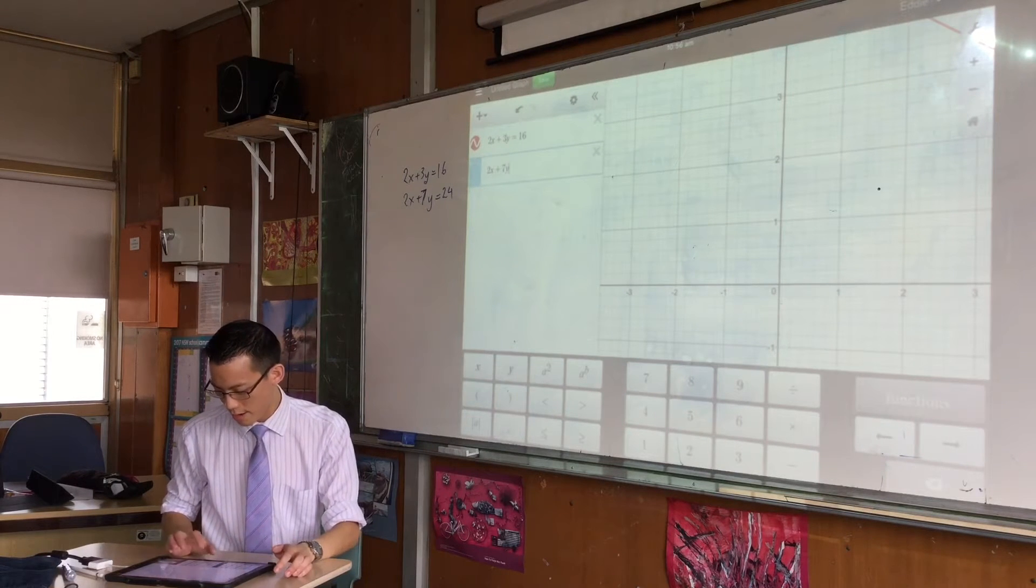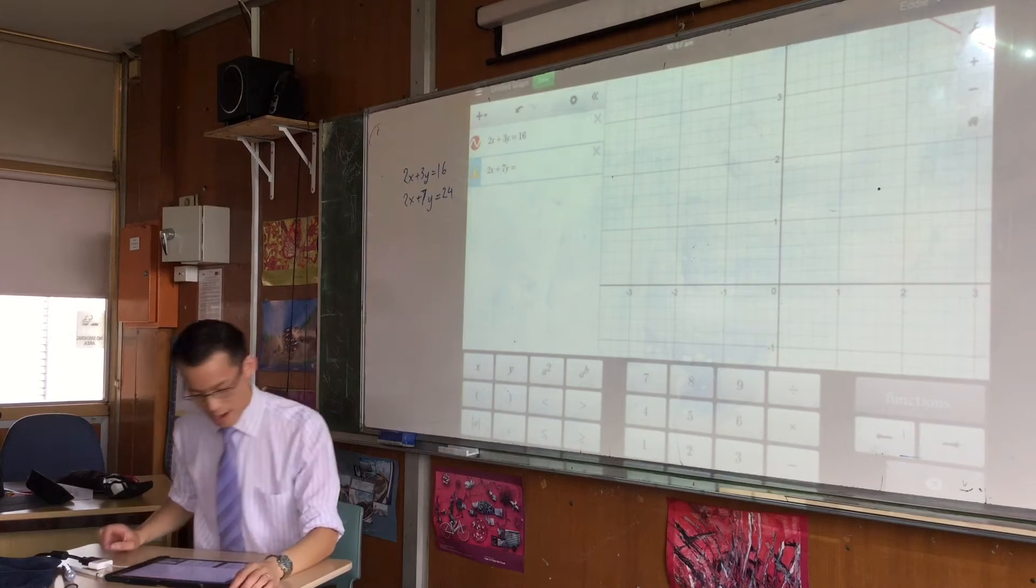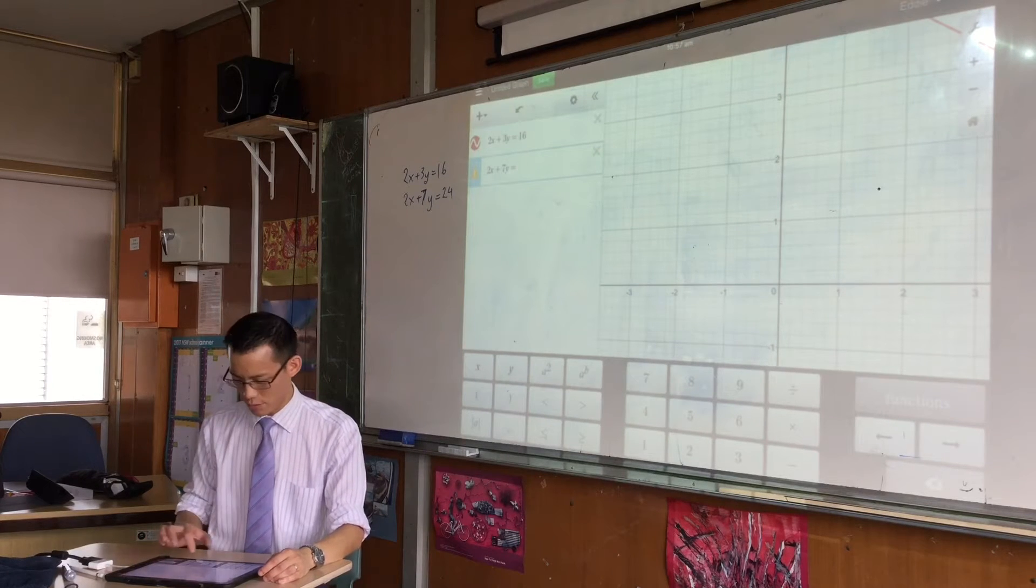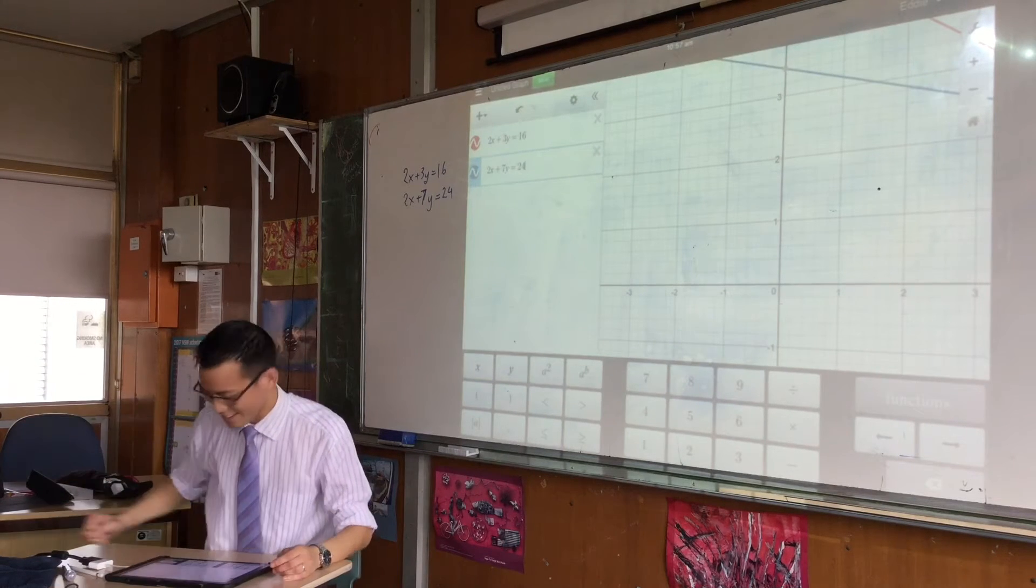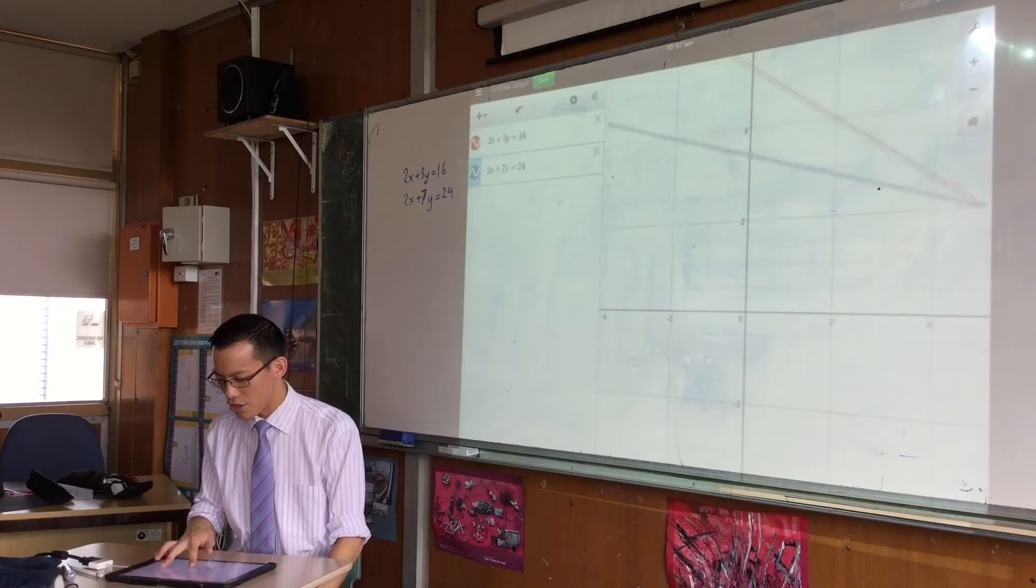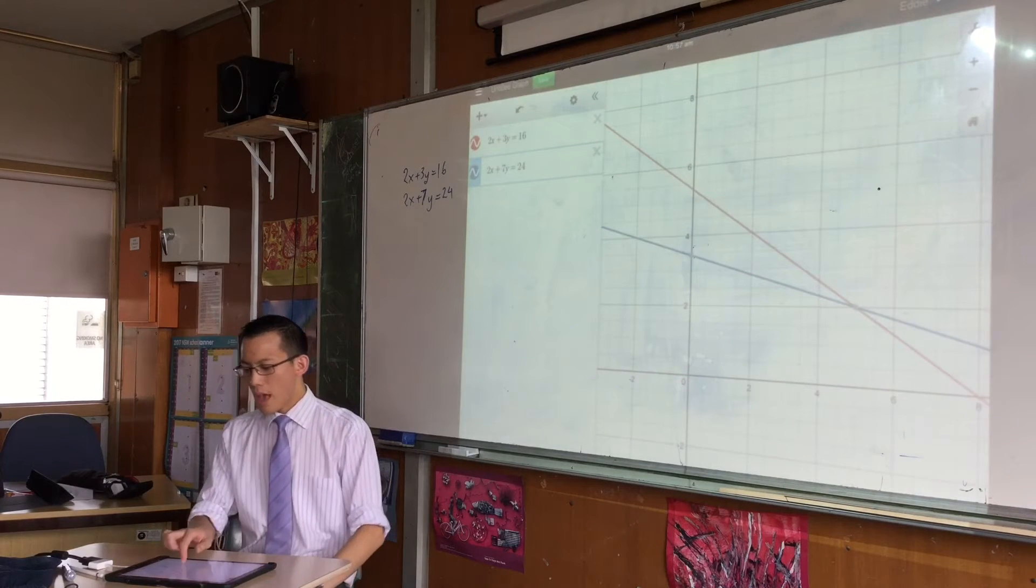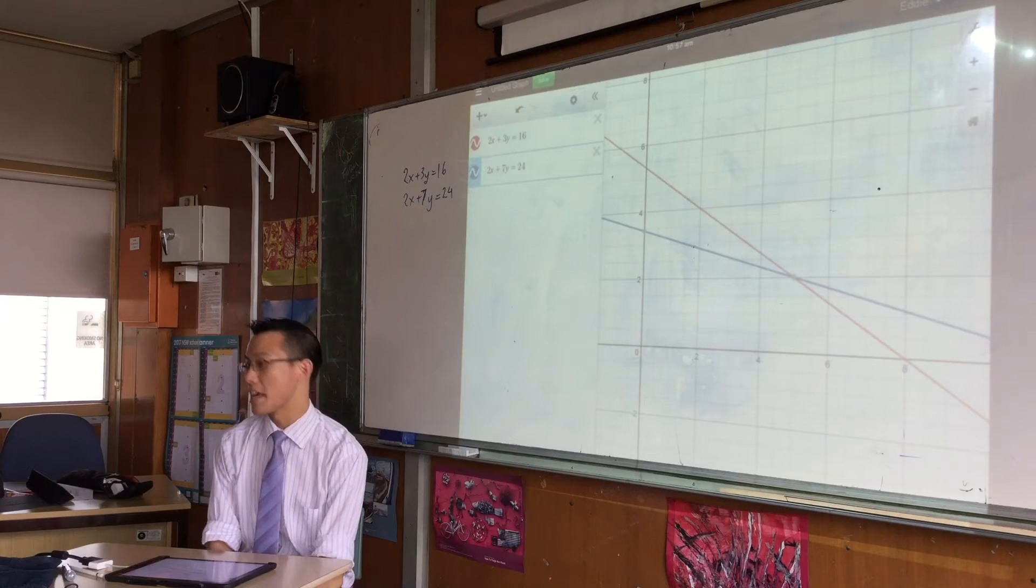So the next one: 2x plus 7y equals 24. Now you can see on my view I don't have it, you just have to move back out, but you can see very nice and cleanly, and they even color code things for you.